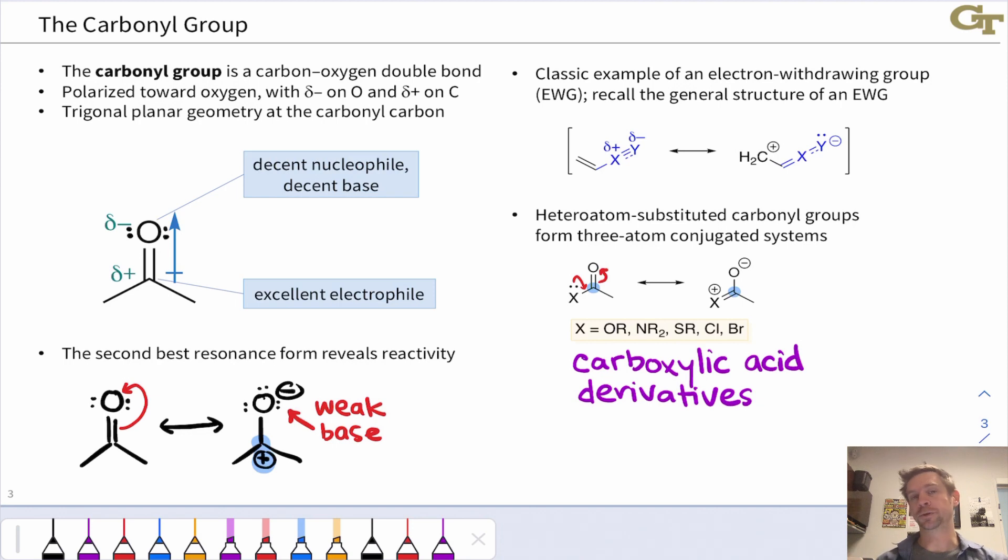Now, heteroatom substituted carbonyl groups are particularly special, because when that heteroatom bears a lone pair, we get yet another important alternative resonance form in which there's positive charge not on the carbonyl carbon, but on the X atom. And this shows how in many what are called carboxylic acid derivatives, we'll see why they're called this, the carbonyl carbon is not as electrophilic as it would be in a ketone or aldehyde, lacking that heteroatom. Some of the positive charge that would be on the carbonyl carbon is actually shared by the X atom to some extent.